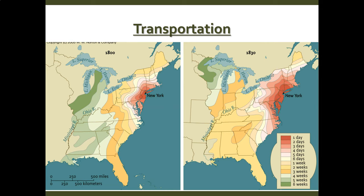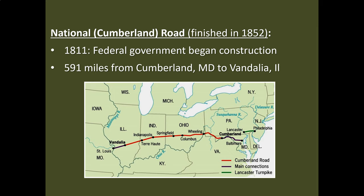Now let's look at transportation. This is a really interesting map showing how far you can go within a day in 1800 from New York City. If you traveled for a day in 1800, you would reach, if you were lucky, eastern Pennsylvania. But by 1830, that same day's travel will get you all the way down to Maryland and Delaware, all the way to western Massachusetts. What had taken six weeks or more now only takes three weeks or so. We are rapidly increasing transportation.